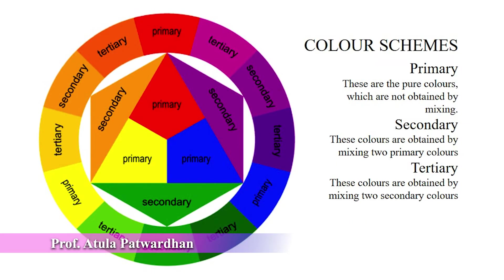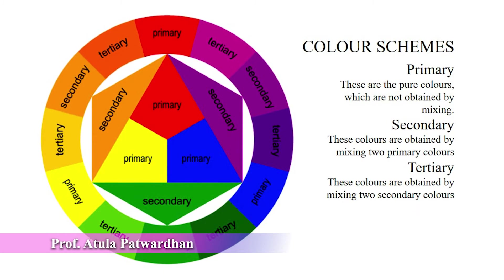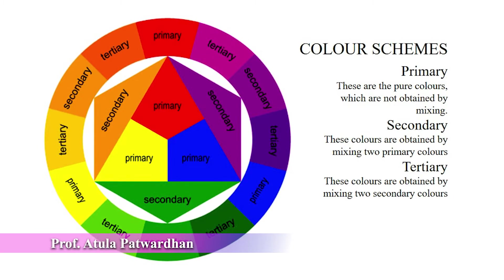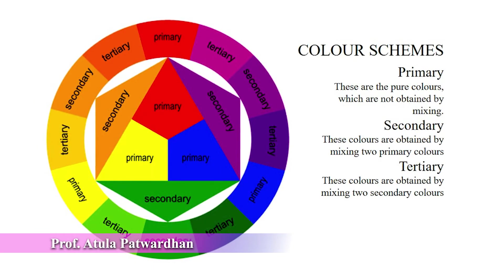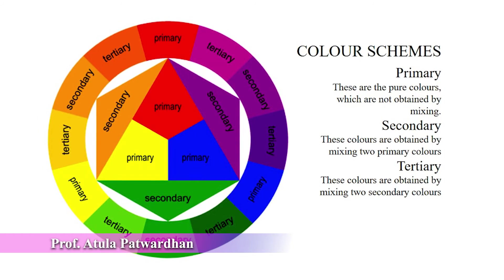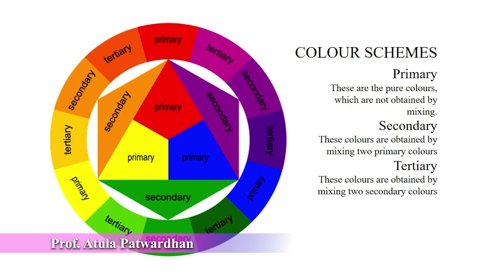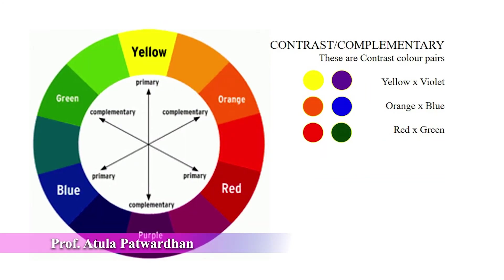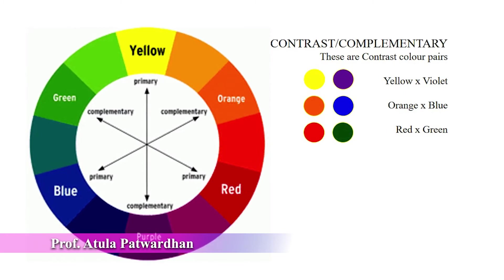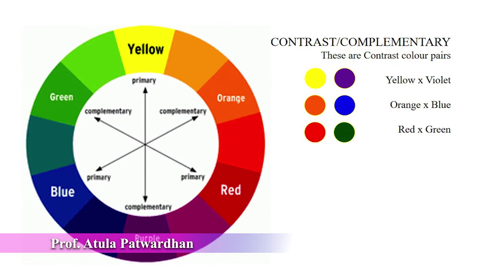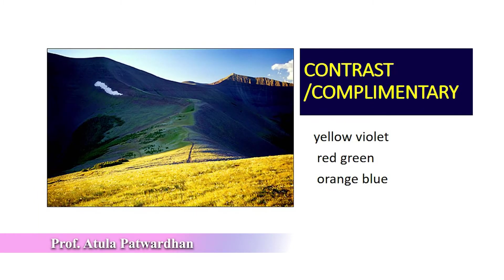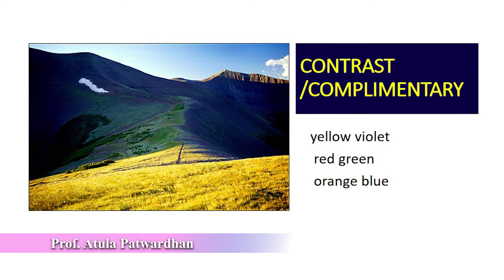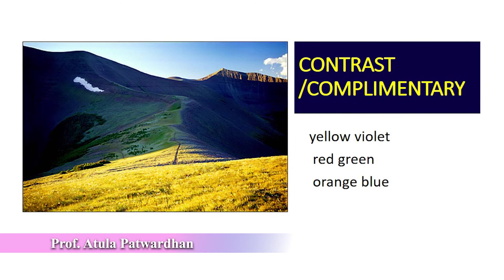Now we will see the color schemes. Primary colors are the pure colors which are not obtained by mixing any two colors. Secondary colors are obtained by mixing two primary colors. Tertiary colors are obtained by mixing two secondary colors. Contrast or complementary colors are positioned exactly opposite on the color wheel. There are three complementary color pairs: yellow and violet, orange and blue, and red and green.